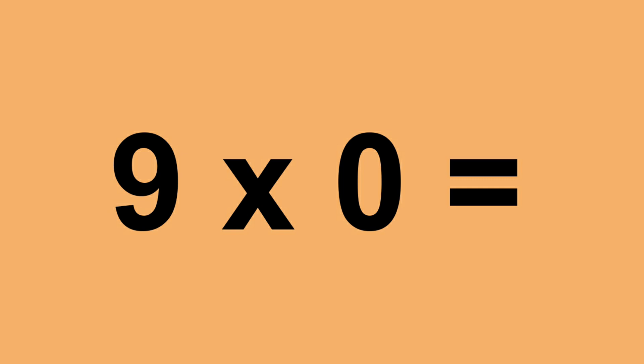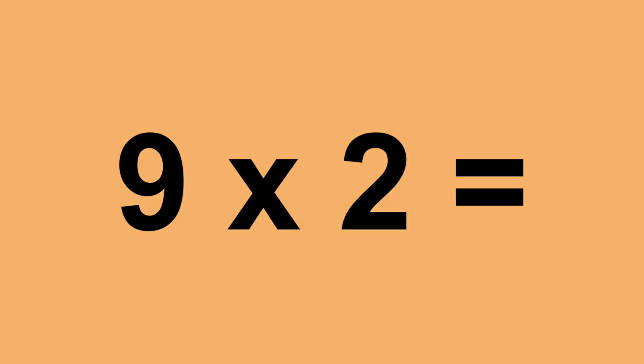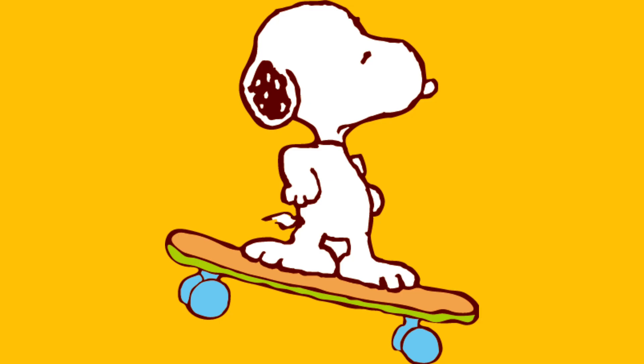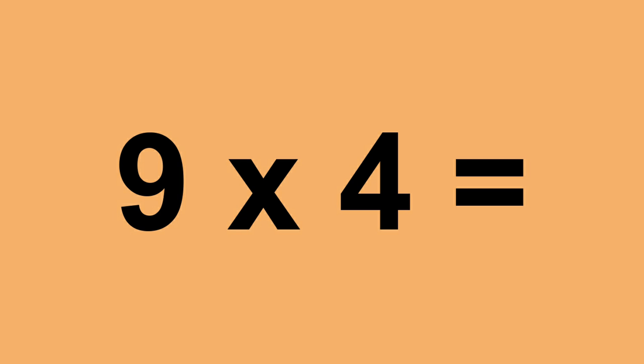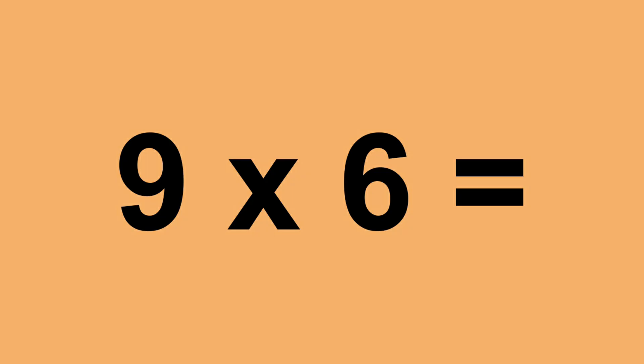9 times 0 equals 0. 9 times 1 equals 9. 9 times 2 equals 18. 9 times 3 equals 27. 9 times 4 equals 36. 9 times 5 equals 45. 9 times 6 equals 54.